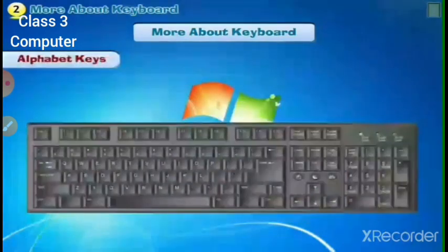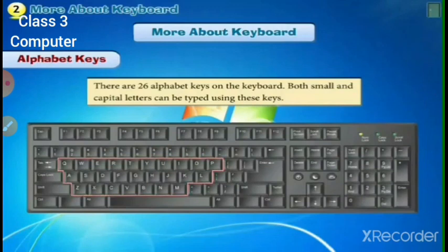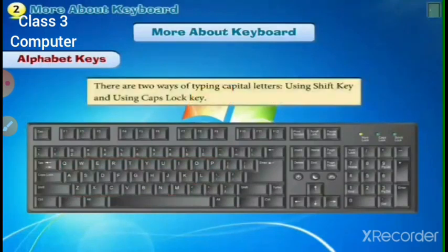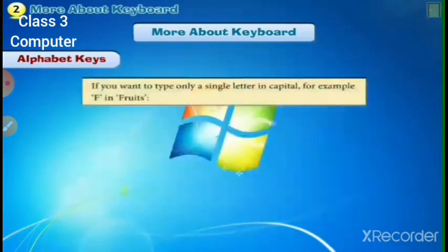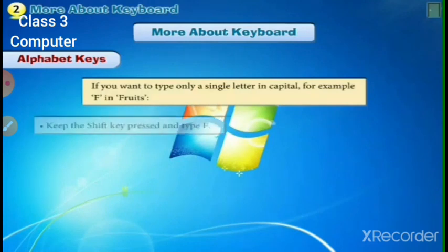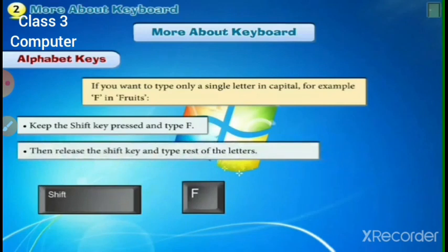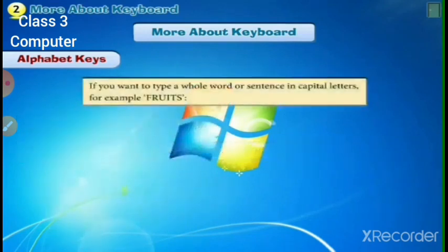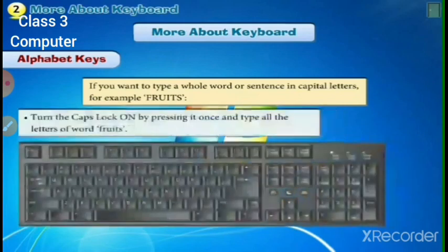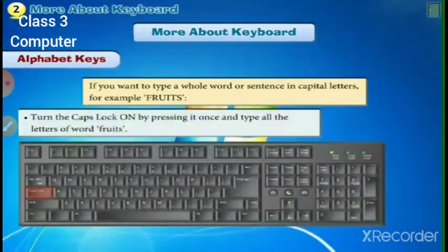There are 26 alphabet keys on the keyboard. Both small and capital letters can be typed using these keys. There are two ways to type in capital letters: using the Shift key and using the Caps Lock key. If you want to type only a single letter in capital — for example, 'F' in 'Fruits' — keep the Shift key pressed and type F, then release Shift and type the rest. If you want to type a whole word or sentence in capital, turn on Caps Lock by pressing it once and type all the letters.